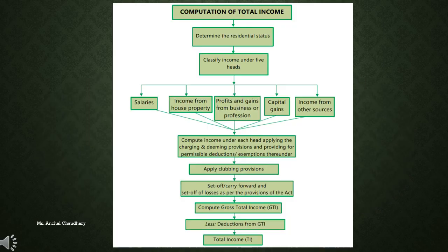These are the steps to compute total income. First, you have to determine the residential status of a person. Then you have to classify the income of that person under the different heads: salaries, income from house properties, profits and gains from business or profession, capital gains, and income from other sources.